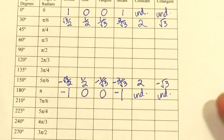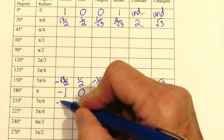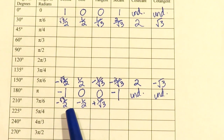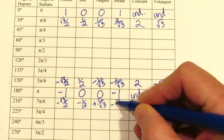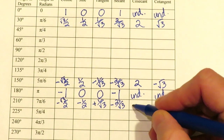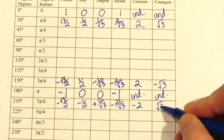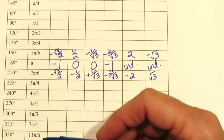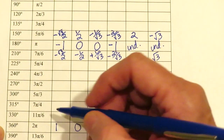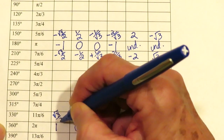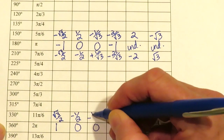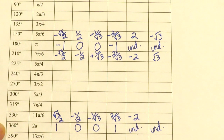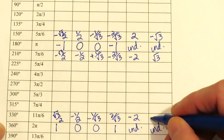210 degrees matches up with 150 also, except now we're in quadrant 3 where both x and y are negative. So sine and cosine are both negative, forcing tangent to be positive. Secant is negative 2 over the square root of 3, cosecant is negative 2, and cotangent is positive square root of 3. Another matching angle is 11π/6, or 330 degrees — in quadrant 4 where x is positive but y is negative, forcing tangent to be negative. Secant is positive, cosecant is negative 2, and cotangent is negative square root of 3.